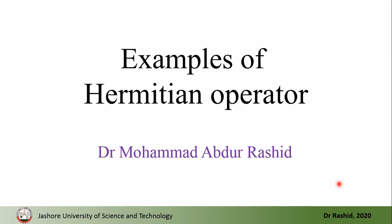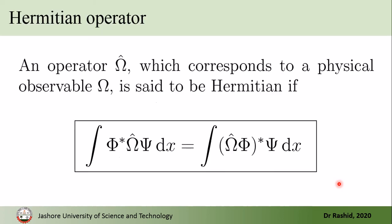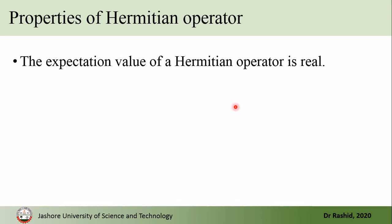Salaam alaikum. In the last video we defined the Hermitian operator and studied its properties. Today we will show by examples that the position and the momentum operators are Hermitian operators. We defined that an operator omega-hat is said to be Hermitian if it follows this equation — that is, if it can be taken from the second function to the first function in this way.